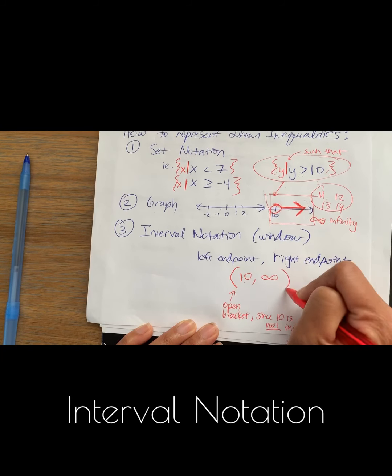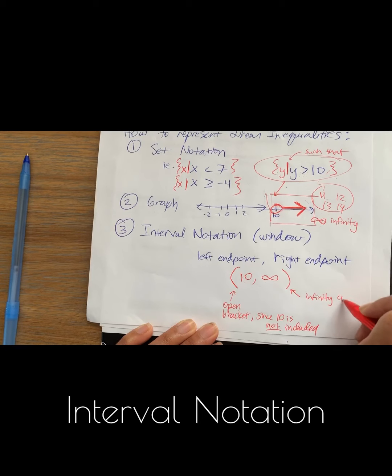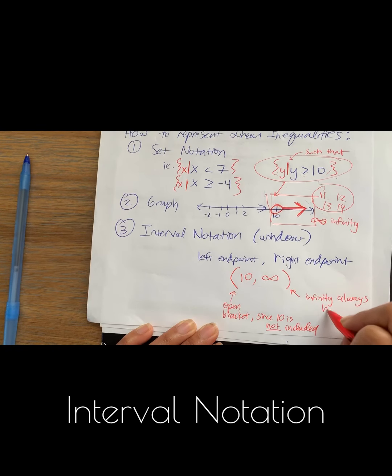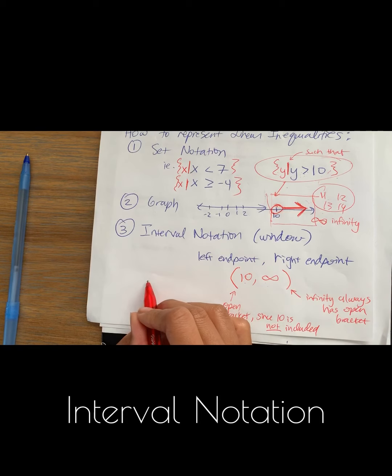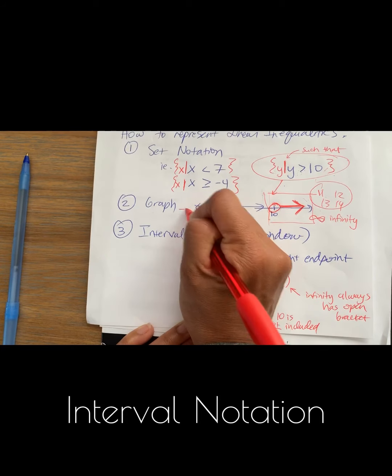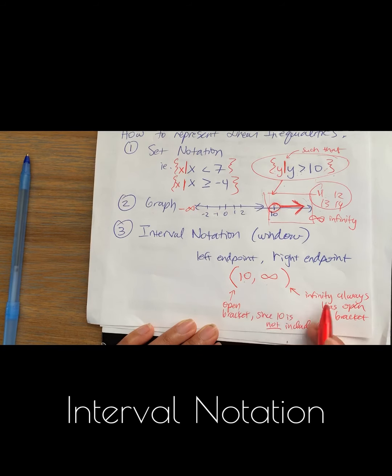So infinity, infinity always has an open bracket. So whenever you have an infinity or a negative infinity, so negative infinity's on this side, if you have a negative infinity in your interval, you always put an open bracket.